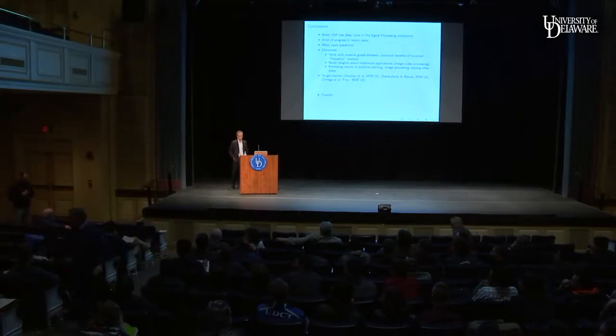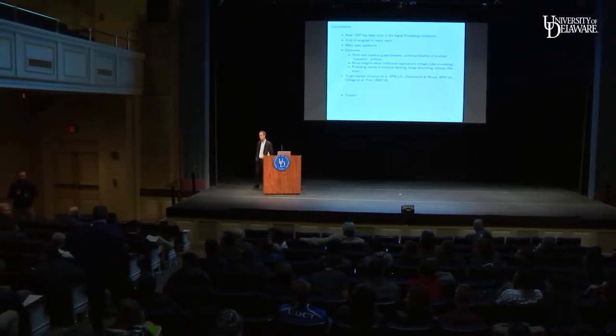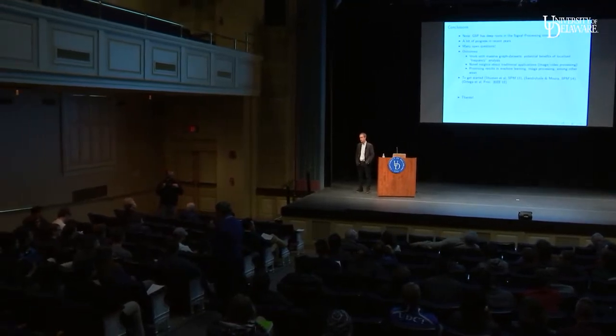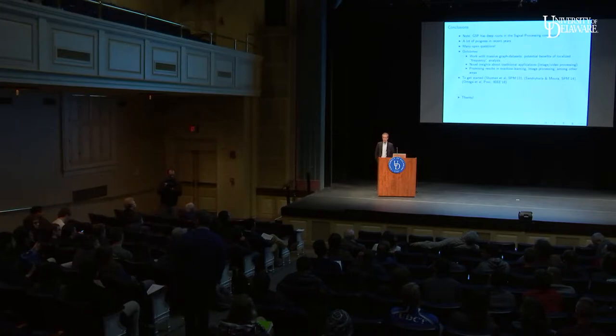Question: You said the lowest 10% of frequencies accounts for 90% of energy — how do we measure that energy? Answer: In the classification experiment, we choose 10% of nodes to label, observe their labels (e.g., dog vs. no dog), use a filter to interpolate labels everywhere, then compute the Euclidean (quadratic) distance between the interpolated signal and the true labels. That's the energy — the reconstruction error.